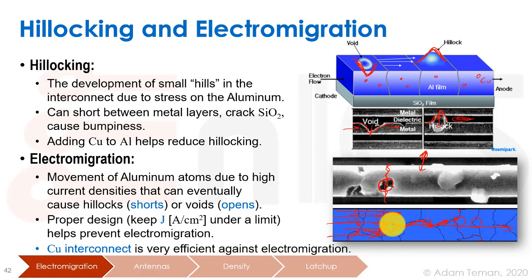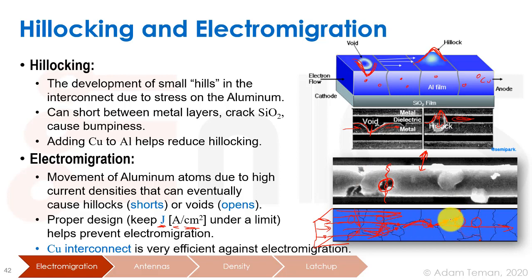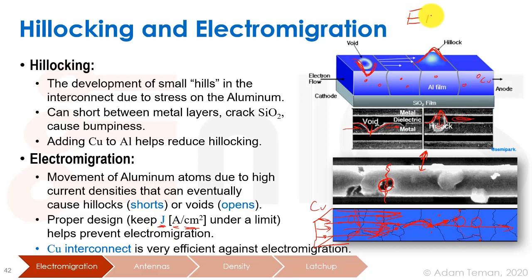To avoid electromigration, we have a design rule: we must keep the current density J — in amperes per centimeter squared of the conductor face — under a certain limit defined by the manufacturer. This depends a lot on the material. Aluminum is very sensitive to electromigration, so one solution is adding copper or replacing aluminum entirely with copper interconnect. Copper has a much higher threshold of allowable current density. Electromigration, or EM, is probably the biggest reliability problem in semiconductors.